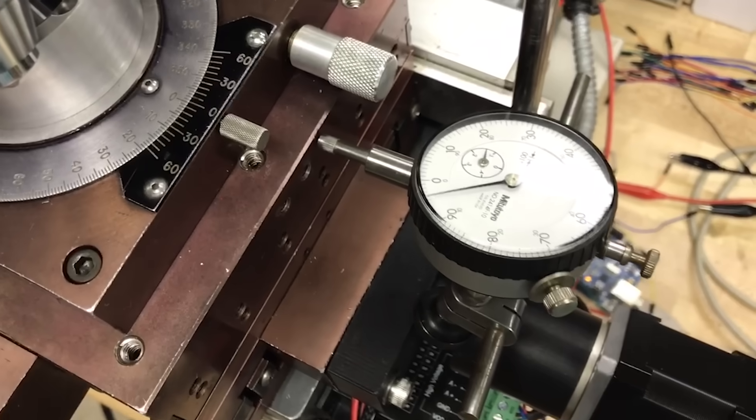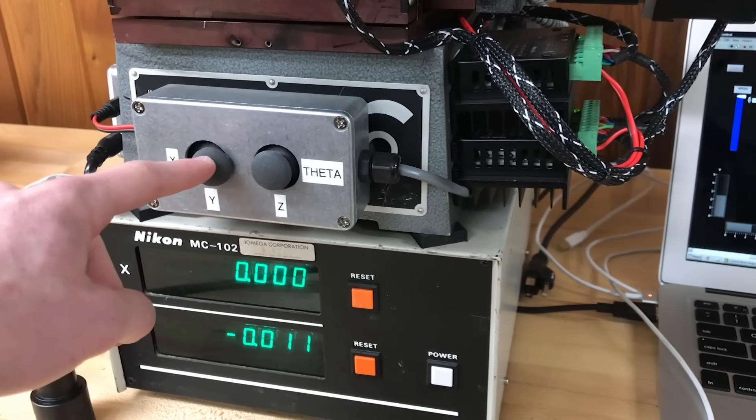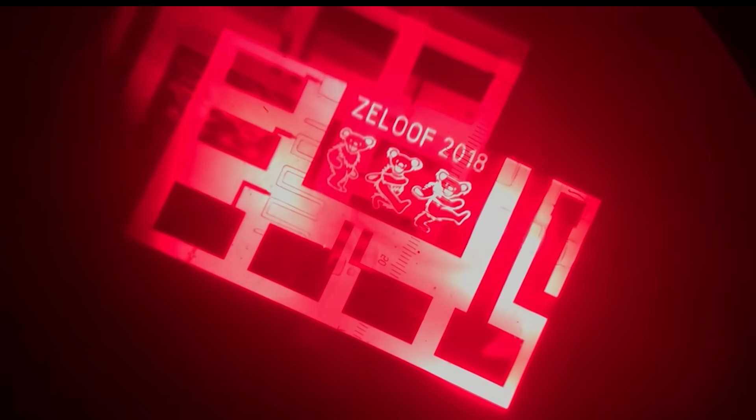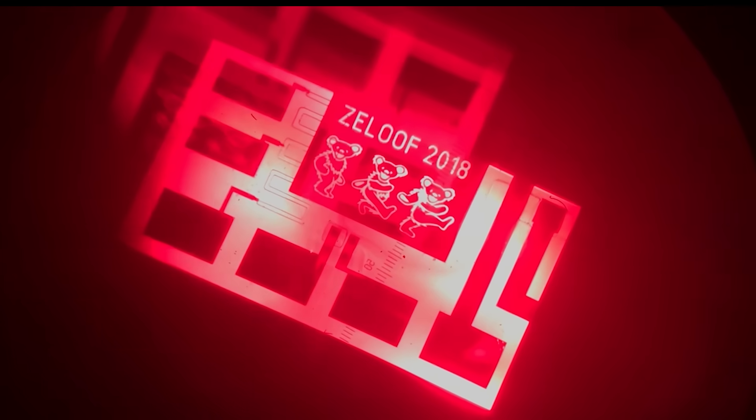To do this at home I've had to build and acquire quite a lot of specialized equipment. This is a home-built lithography stepper that projects images in ultraviolet onto the chip from a DLP projector to expose photoresist and pattern the various layers.